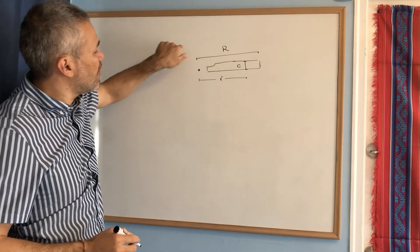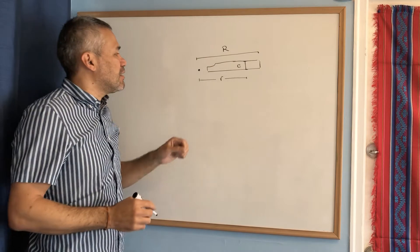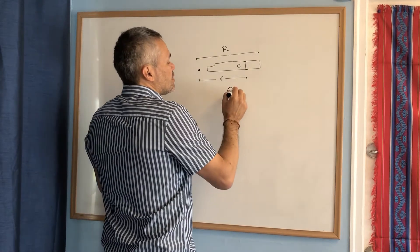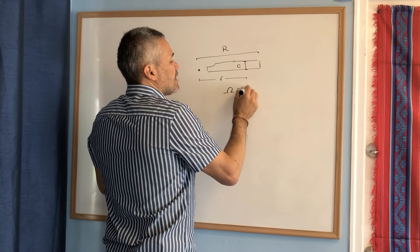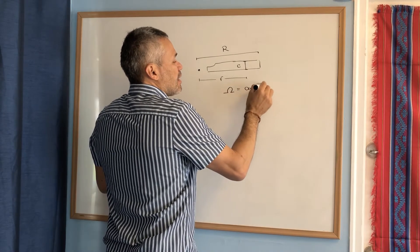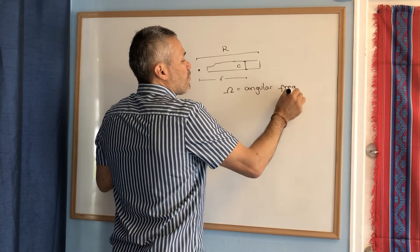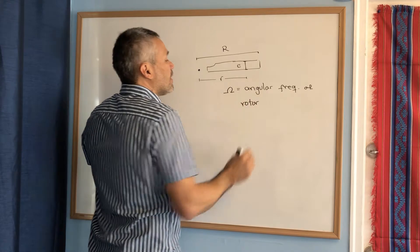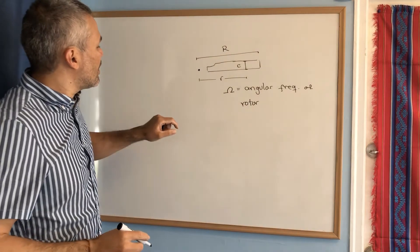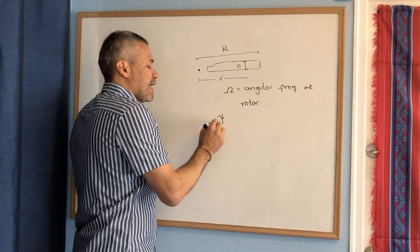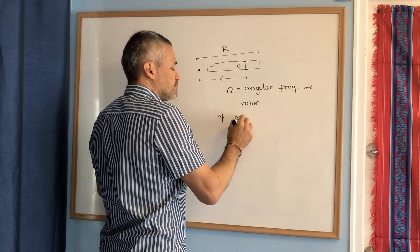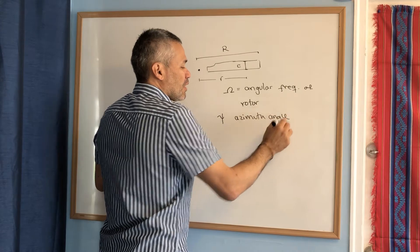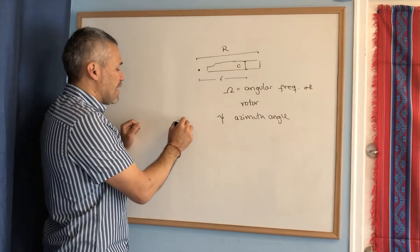This blade is going to be rotating either clockwise or counterclockwise. The angle of rotation is denoted by omega — this is the angular frequency of the rotor. Now let me explain the azimuth angle. The azimuth angle is the angle related with the vertical line.